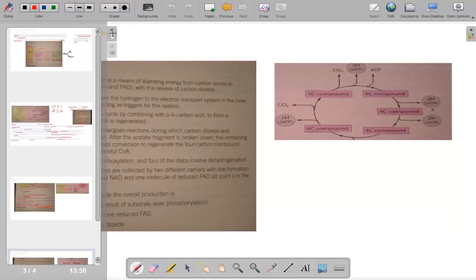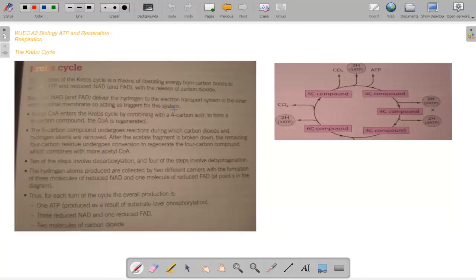And finally we move on to the grand daddy of all chemical reactions that makes my brain hurt just looking at it. It is the Krebs cycle. The function of the Krebs cycle is a means of liberating energy from carbon bonds to provide ATP and reduced NAD and FAD as well for the release of carbon dioxide. The reduced NAD and FAD deliver the hydrogen to the electron transport system in the inner mitochondrial membrane, so acting as triggers for the system. Acetyl coenzyme A enters the Krebs cycle by combining with a four carbon acid to form a six carbon compound. Then the CoA is regenerated.